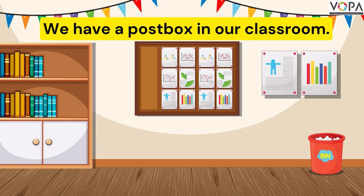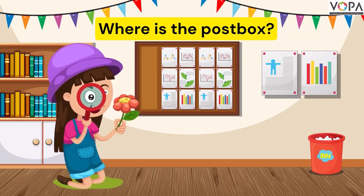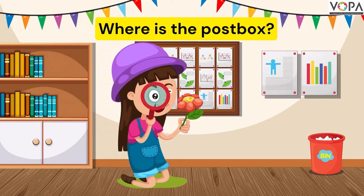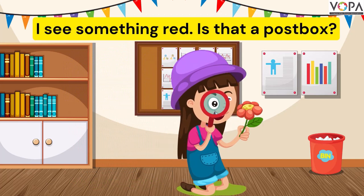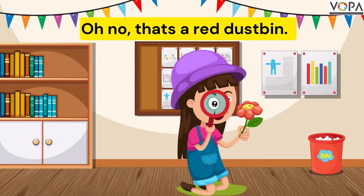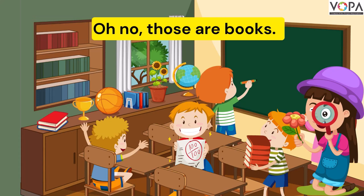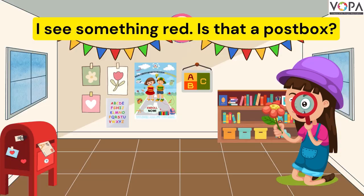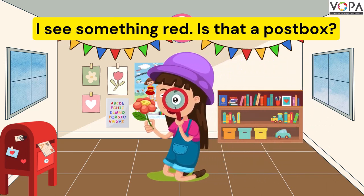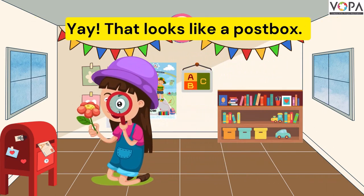Where is the post box? Do you know which color is the post box? I see something red — is that a post box? Oh no, that's a red dustbin. I see something red — is that a post box? Oh no, those are books. I see something red — is that a post box? Yay, that looks like a post box!